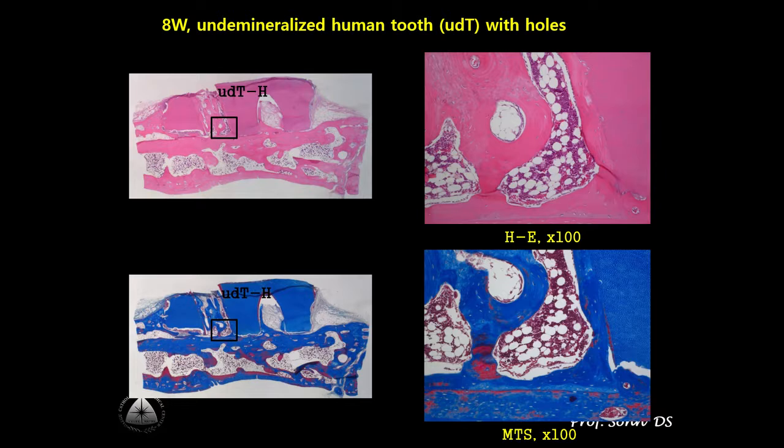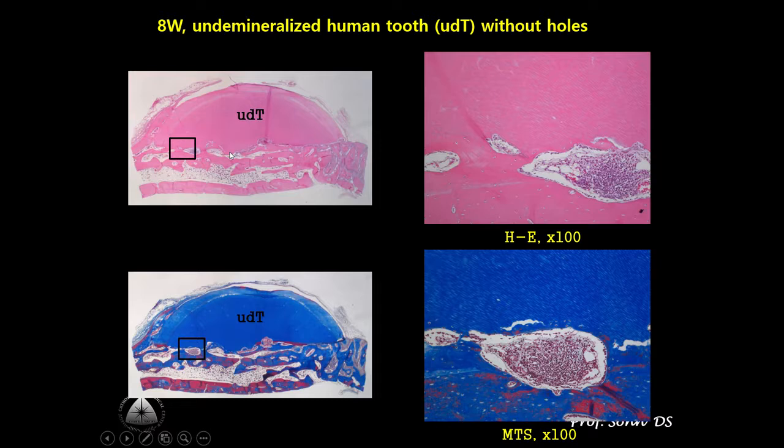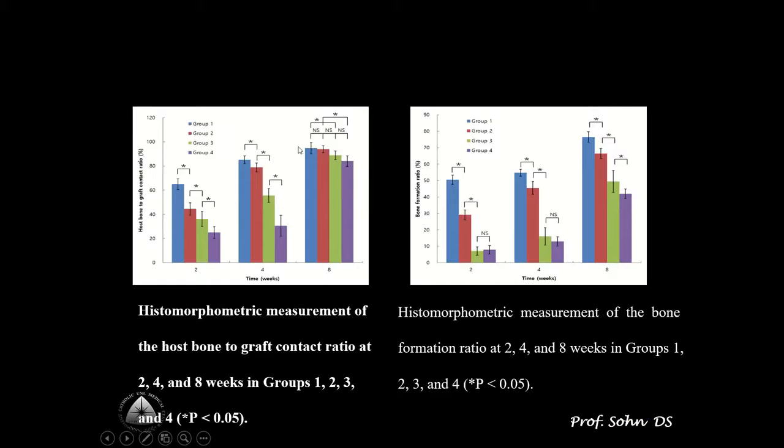At 8 weeks in Group 3, newly formed bone was seen in the micro holes and at the junction between dentin block and calvaria. Histology result of Group 4 after 8 weeks healing also showed newly formed bone at the junction between dentin block and the calvarial bone.